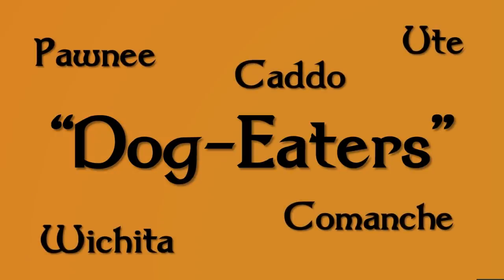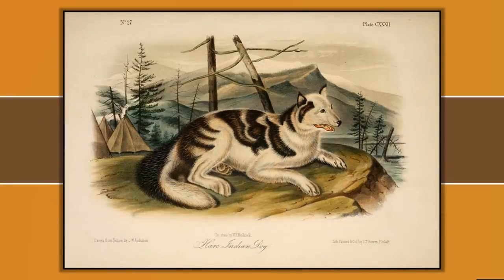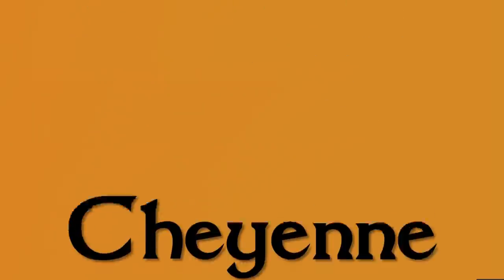Interestingly, lots of other tribes - like the Pawnee, the Caddo, the Ute, the Comanche, and the Wichita, groups in Kansas and Texas - remember the Arapaho as 'dog eaters.' So that's an interesting alternate name that they all share for them, suggesting maybe it was a practice special to that tribe. The Arapaho themselves referred to themselves as 'Hinono Eino,' meaning 'our people' - so again, just referring to their own people, which makes sense.